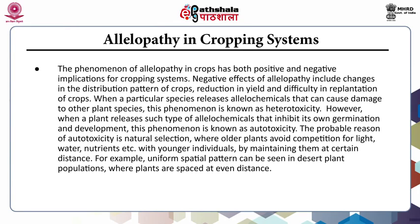Allelopathy in cropping systems has both positive and negative implications. Negative effects include changes in distribution patterns of crops, reduction in yield and difficulty in replantation. When a species releases allelochemicals that damage other plant species, this is termed heterotoxicity. When a plant releases allelochemicals that inhibit its own germination and development, this is known as autotoxicity. The probable reason for autotoxicity is natural selection, where older plants avoid competition for light, water and nutrients with younger ones by maintaining them at a certain distance.